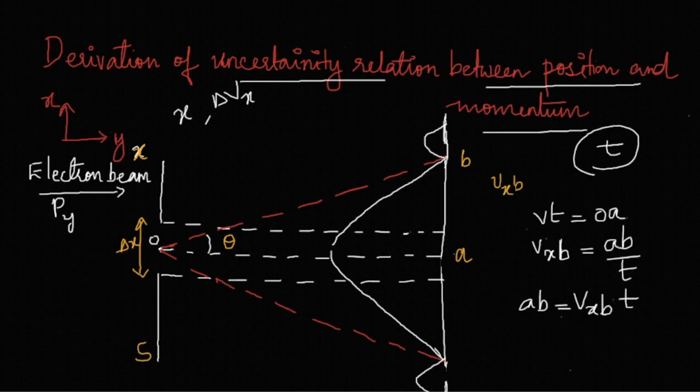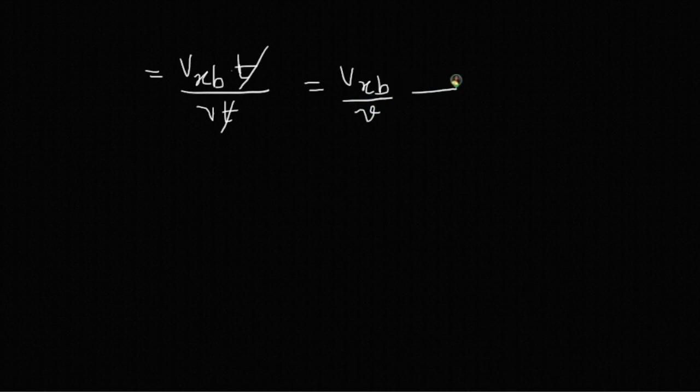From the figure we may write tan theta, and again theta being very small, tan theta may be approximated to theta. That is given by AB by OA, which is vxb times t divided by v times t. Cancel out t, and we get theta as vxb by v. Call it equation number 3.